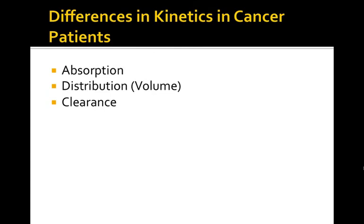What is different about a cancer patient than other patients that we need to be aware of when we are dosing any drug? If we think about our trip through the body — which is usually where I start with kinetics — the first thing we have to worry about is absorption. Many of the drugs that we use to treat cancer, and the cancer itself, can cause a lot of gastrointestinal distress, which may affect the absorption of drugs that are given orally.